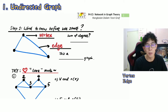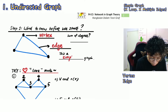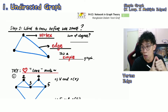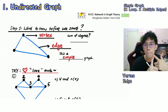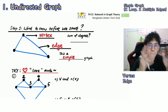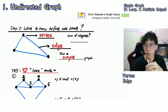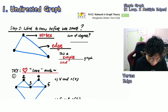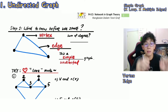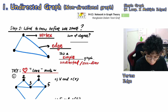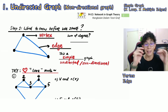A student might say: 'Teacher, what kind of graph is this?' This is a simple graph. Why? Number one, it hasn't gone through a specific thing called loops, and it hasn't gone through something called multiple edges — we'll talk about those in a while. This is also an undirected graph, meaning there are no arrows between the vertices. You might also call it a non-directional graph — yes, that's correct too.